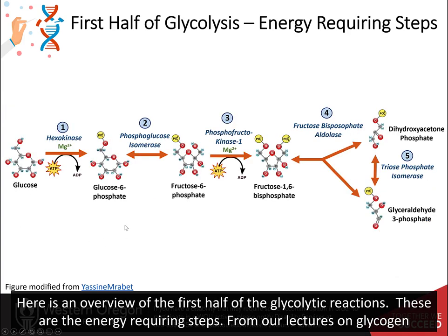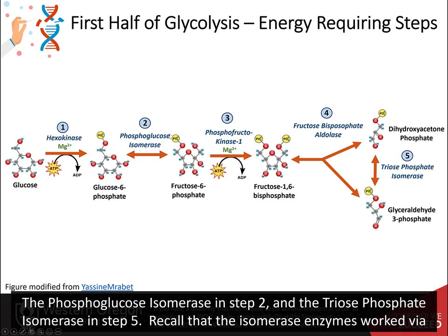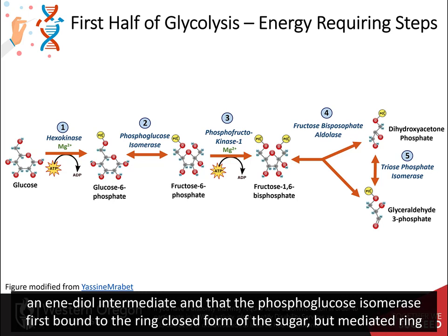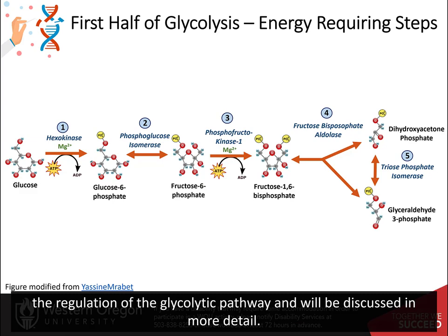Here is an overview of the first half of the glycolytic reactions — these are the energy-requiring steps. From our lectures on glycogen metabolism, you have already been introduced to three of the five enzymes utilized in this pathway: hexokinase in step one, phosphoglucose isomerase in step two, and triosephosphate isomerase in step five. Recall that the isomerase enzymes worked via an enediol intermediate and that the phosphoglucose isomerase first bound to the ring-closed form of the sugar but mediated ring opening during the reaction mechanism. Both hexokinase in step one and phosphofructokinase in step three are important enzymes in the regulation of the glycolytic pathway and will be discussed in more detail.